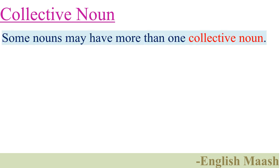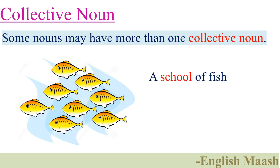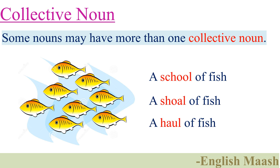Some nouns may have more than one collective noun, as you can see here. A school of fish, a shoal of fish, a haul of fish. School, shoal, and haul are correct collective nouns for fish.